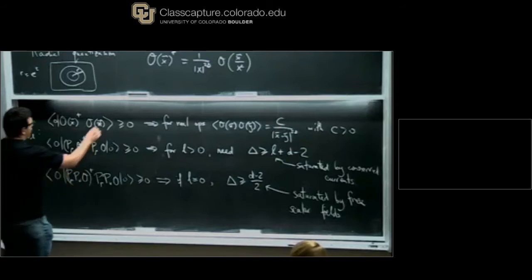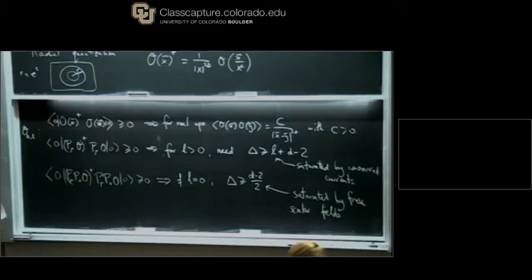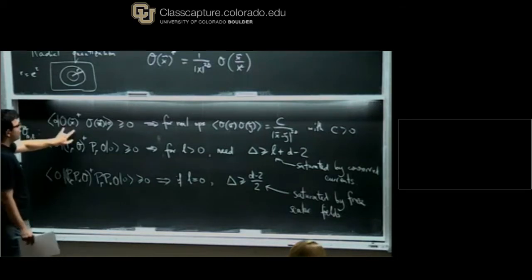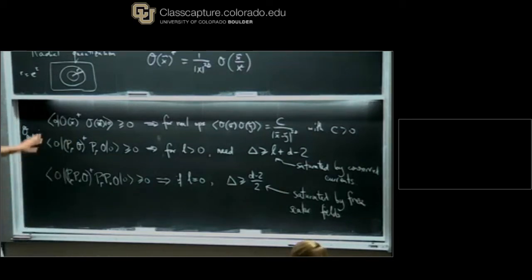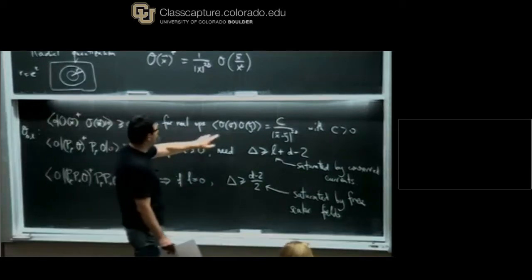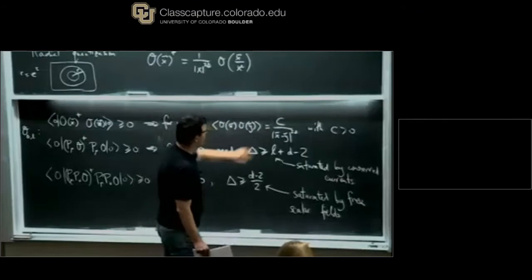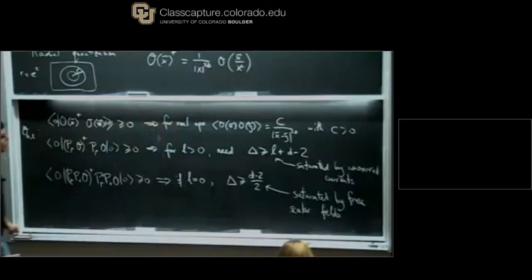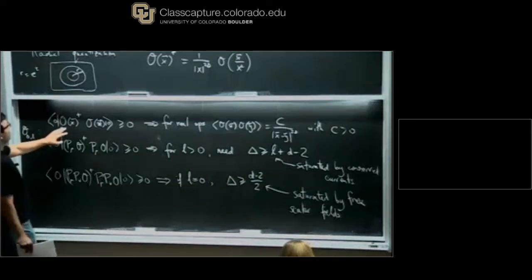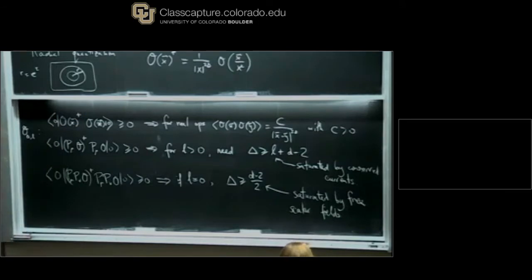From this one can obtain various constraints that unitary conformal field theories should obey. In particular, if we look at the two-point function of O with O conjugate, this should be positive because it's just a norm of a state. This condition implies that for real operators, if O(x)O(y) has the form C over (x minus y) to the 2 delta, then C must be positive. To show that, just plug in the formula for O of x dagger.